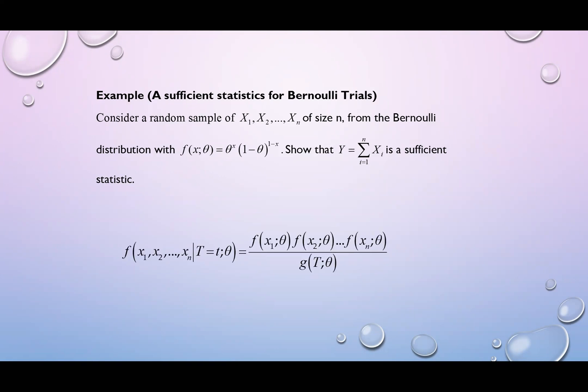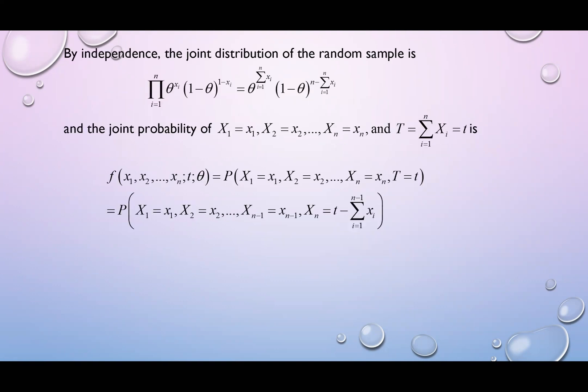We will use the conditional probability concept. So, by independence, the joint distribution of the random sample is given as the product of your theta to the power Xi, 1 minus theta to the power 1 minus Xi. If we simplify, we can write down theta to the power summation Xi, 1 minus theta to the power n minus summation Xi. This product is the same thing if you write the product for the likelihood function.